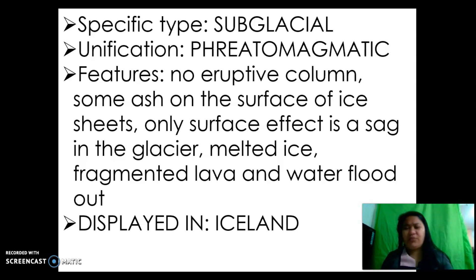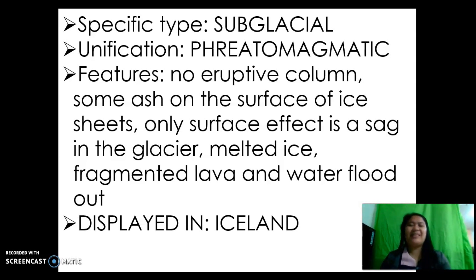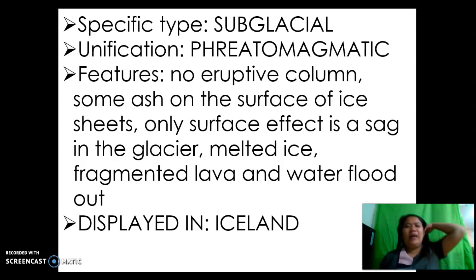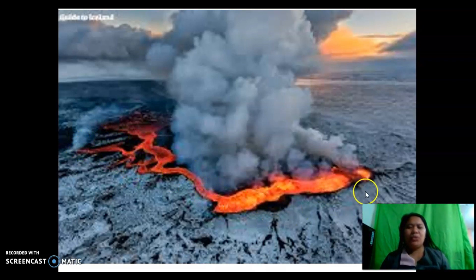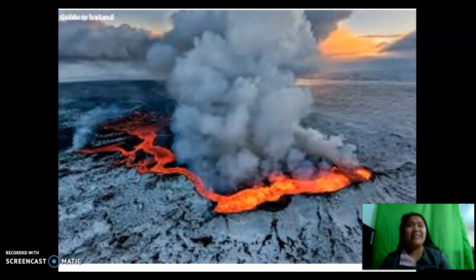Next is the subglacial classification, under phreatomagmatic. Its features include no eruptive column — no formation of gas plumes, ashes, tephra, or lava fountain. Only some ash appears on the surface of ice sheets. The surface effect is a saggy effect on the glacier — melted ice, fragmented lava, and water flood out. Displayed in Iceland, it shows a saggy effect or a rupture on part of the icy or glacier part of the volcano, signifying the presence of an active volcano in that area.